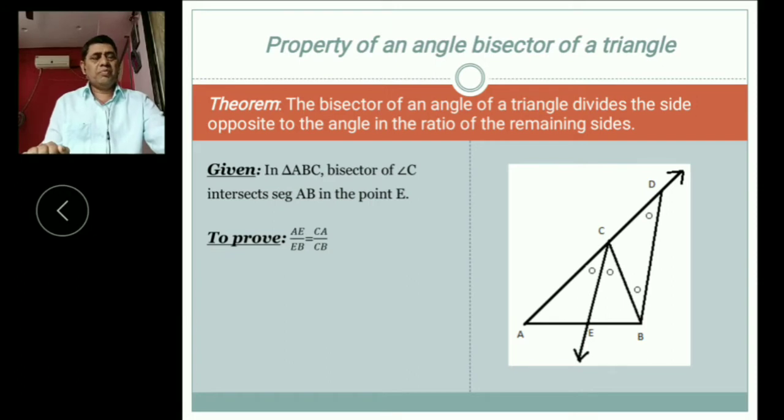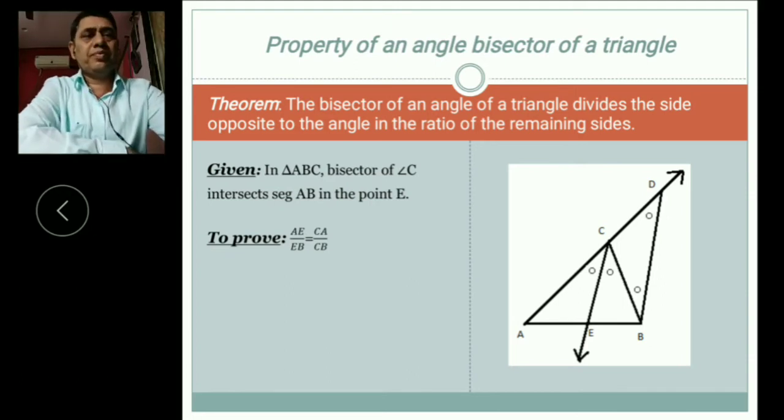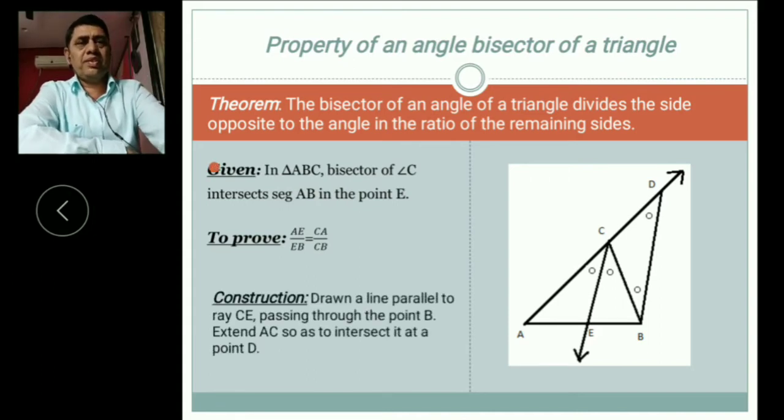So we only come towards CD is CB. Means we prove that actual segment BC is congruent to segment CD. Construction: Drawn line parallel to ray CE passing through point B, extend AC so as to intersect it at point D.